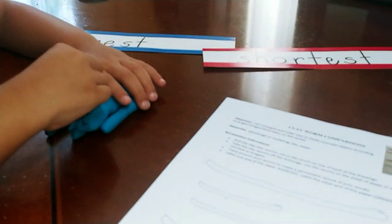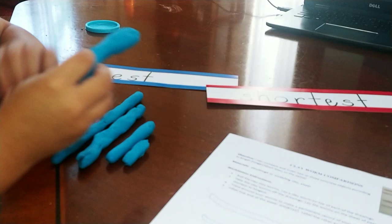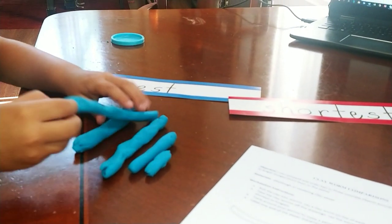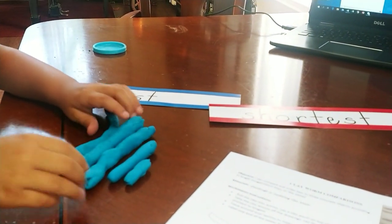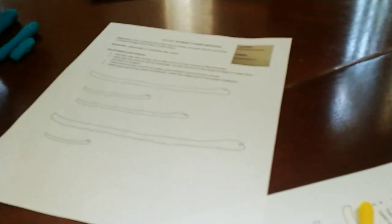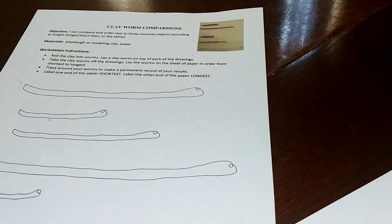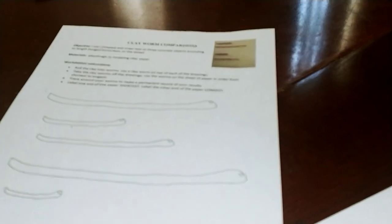If you want, you can have the kids trace around those on another sheet of paper to have a permanent record. This is a great activity for comparing lengths. I hope you're having a great time building math positive mindsets with your kids. Check out Clay Worm Comparisons on my website, kerrycutler.com. Thanks!